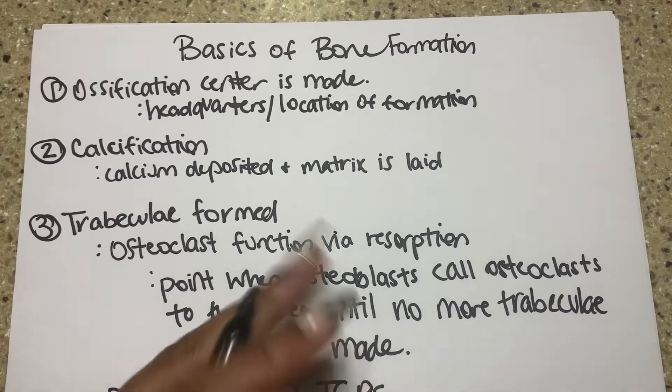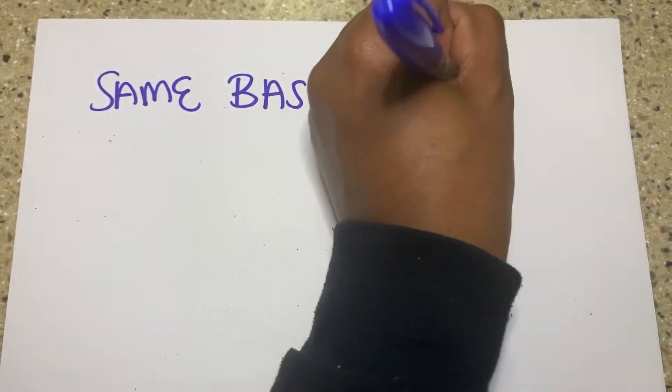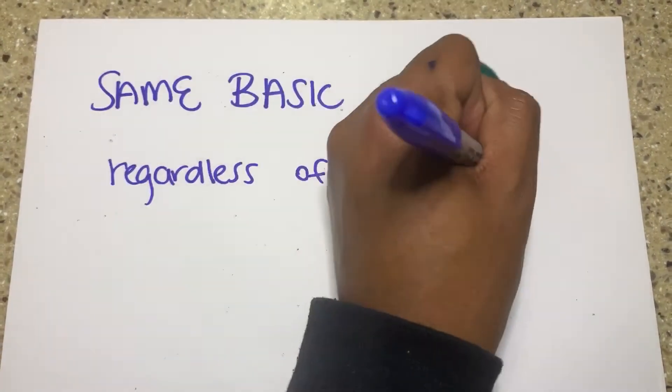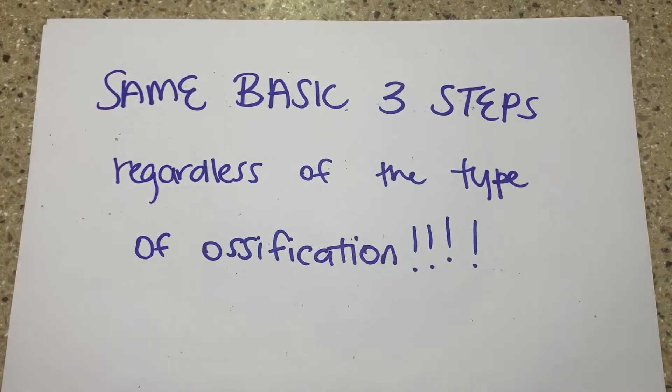Bones are made via intramembranous ossification through three steps: mesenchymal cells cluster to form osteoprogenitor cells that develop into osteoblasts; those osteoblasts lay down the extracellular matrix allowing calcification; then osteoclasts, stimulated by osteoblasts, come in to form trabeculae so the bone has a little give and isn't super brittle. That's your friend that doesn't have a role model — she learns it through the relationships she builds, and she ends up seeing the need for a balance of soft and hard.